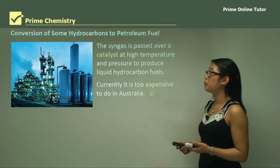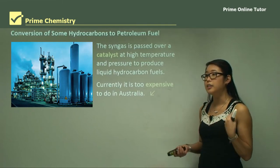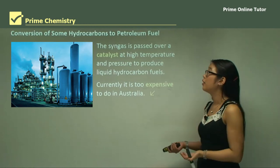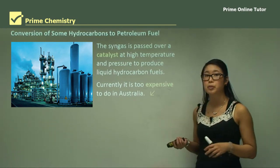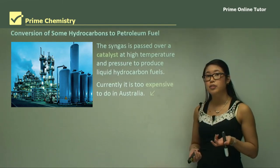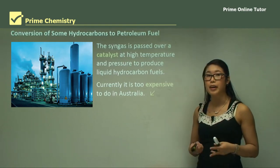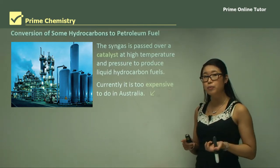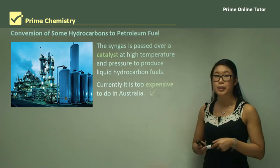Fossil fuels come from deceased animals and plants and it takes millions of years to pressurise and heat them into hydrocarbons. There are different types of fossil fuels such as natural gas and coal, and if we run out of certain fuels like petroleum we need other ways to obtain energy. What people have done is tried to take coal and convert it into liquid fuels.